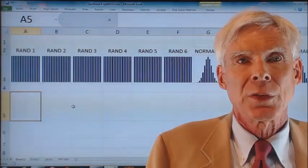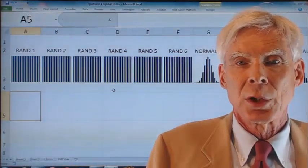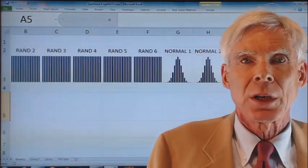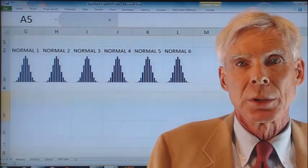First, I have six flat SIPs. That's the uncertainty of the spinner. And these are followed by six normal or bell-shaped SIPs.